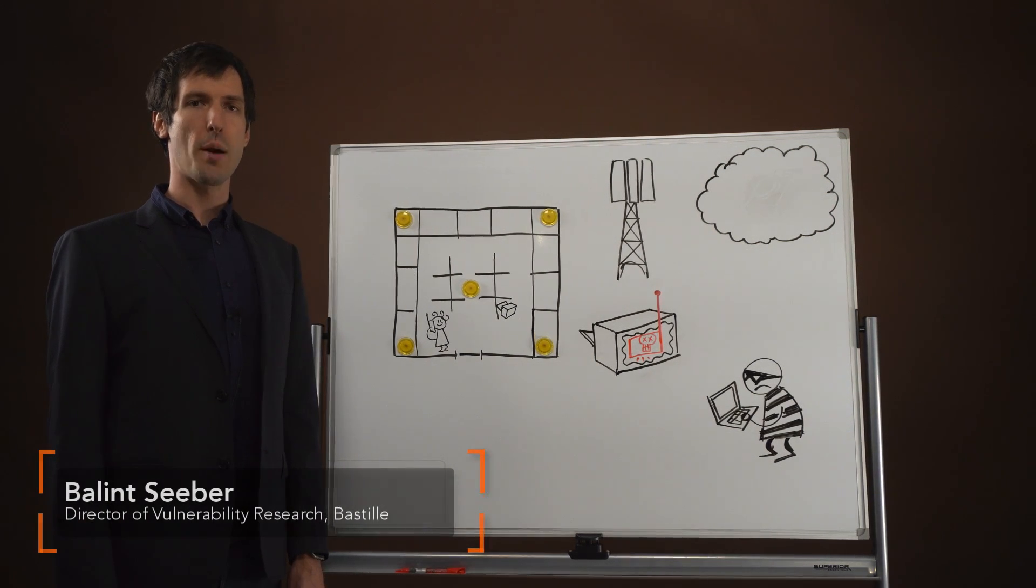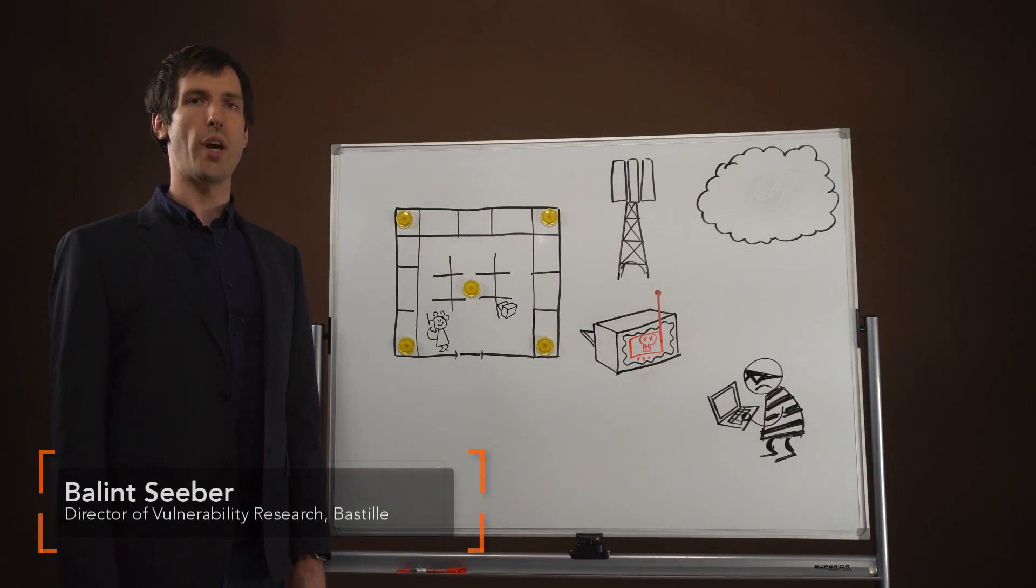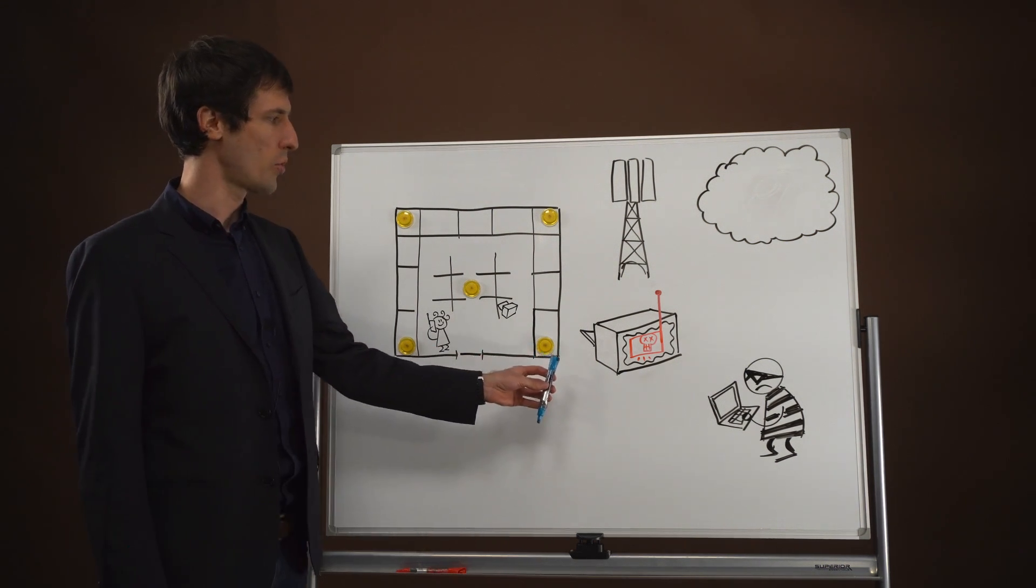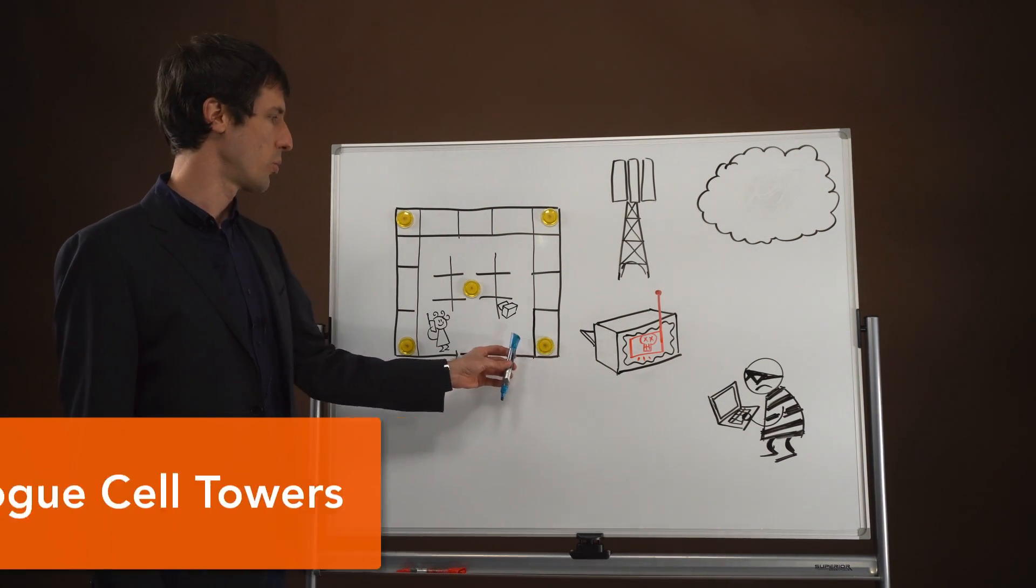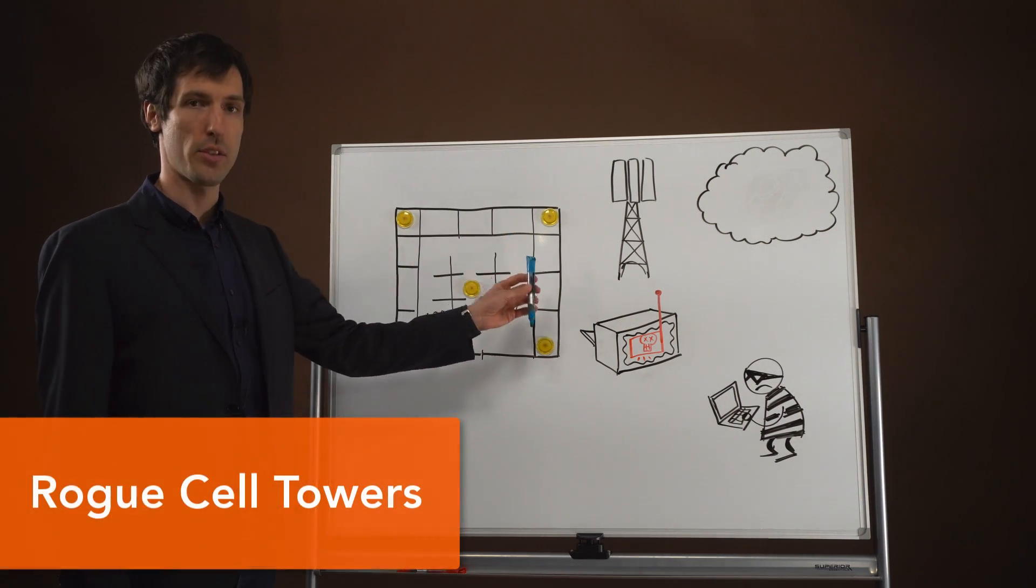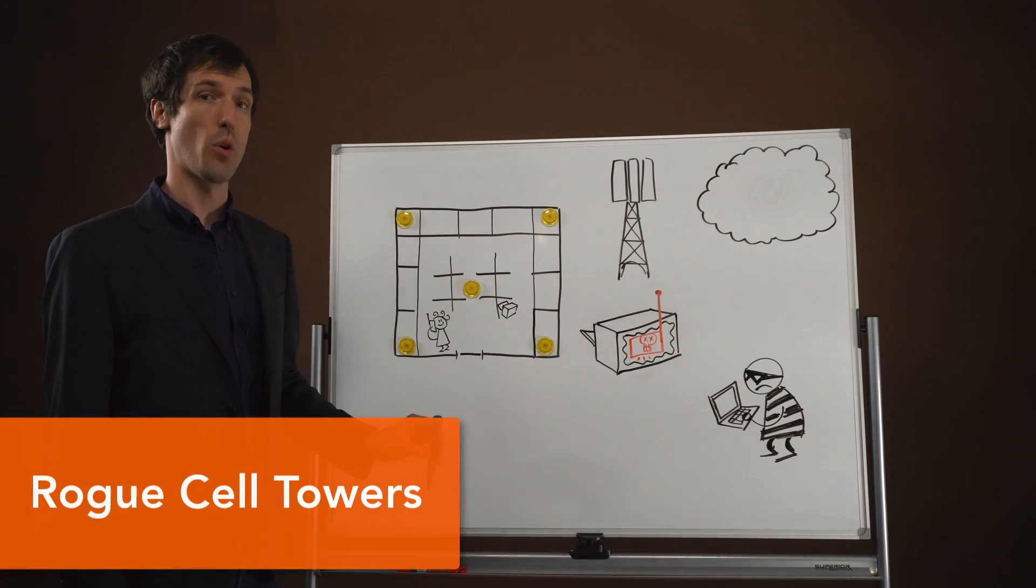Hello, my name is Balint Seeber and I'm the Director of Vulnerability Research at Bastille. I'd like to show you how an attacker can use a rogue cell tower to listen to sensitive information and how you can use the Bastille solution to actually detect these rogue cell towers.